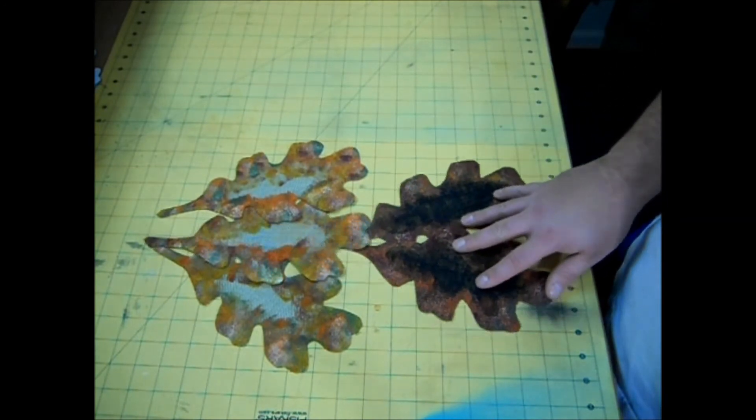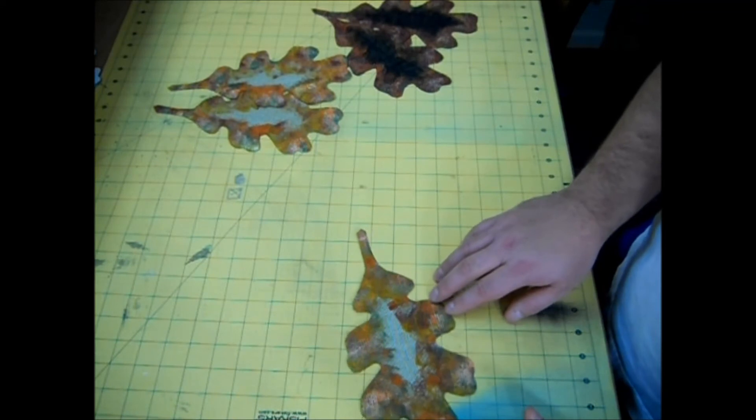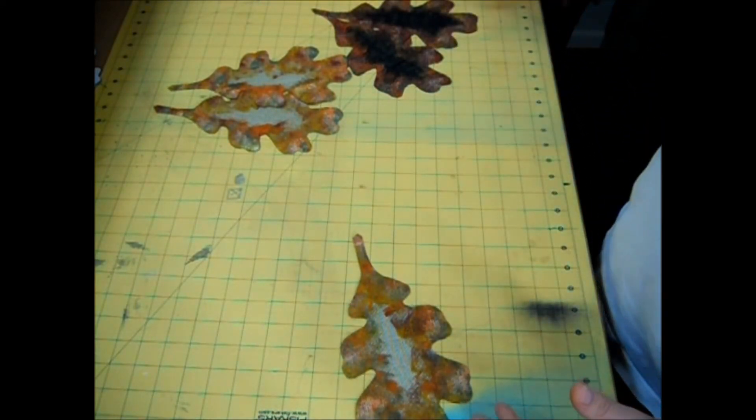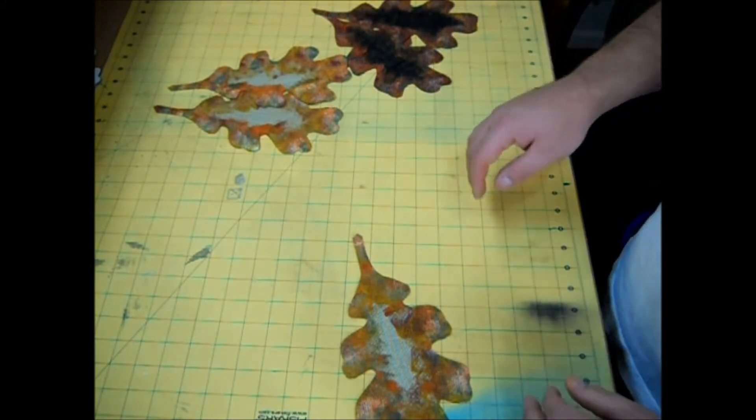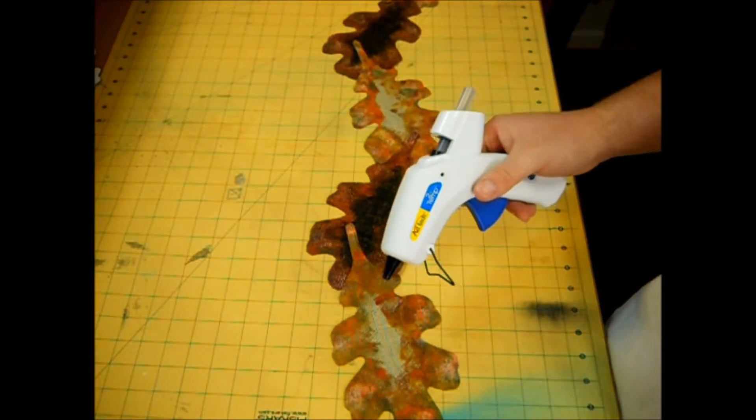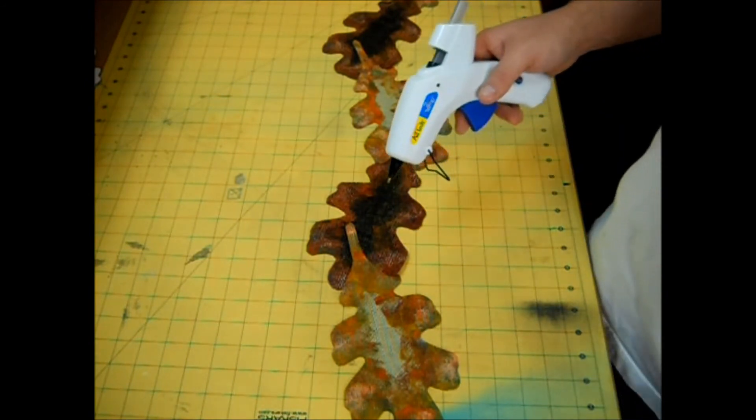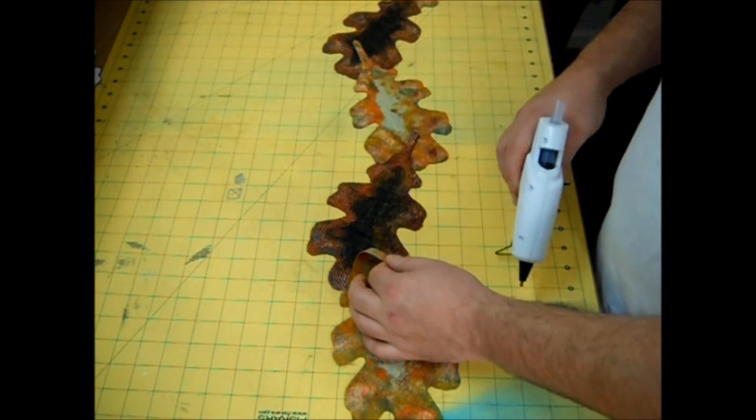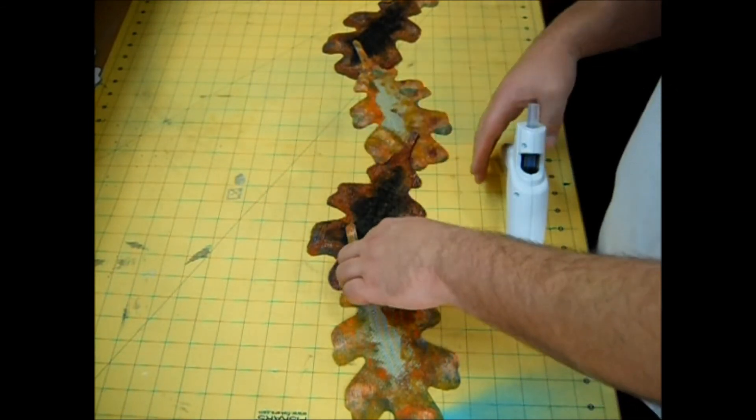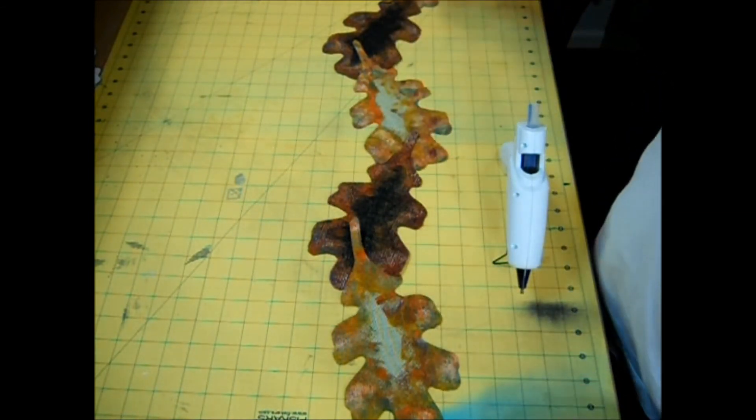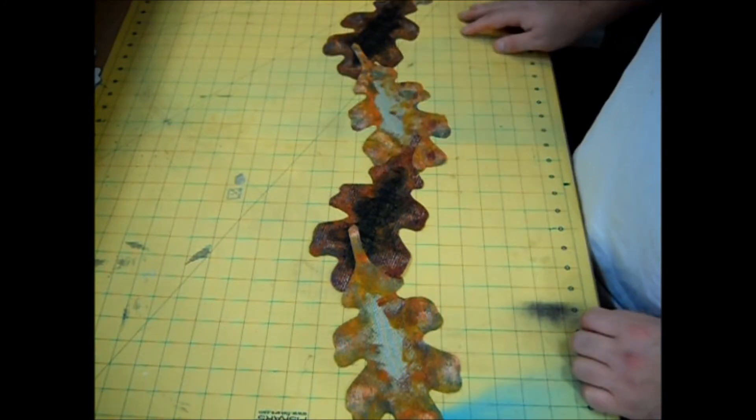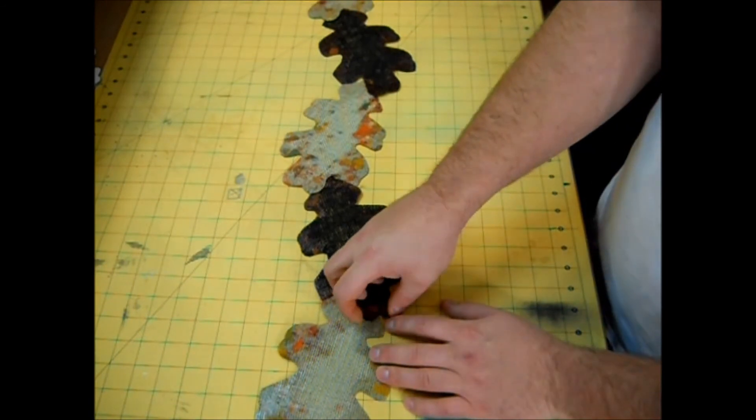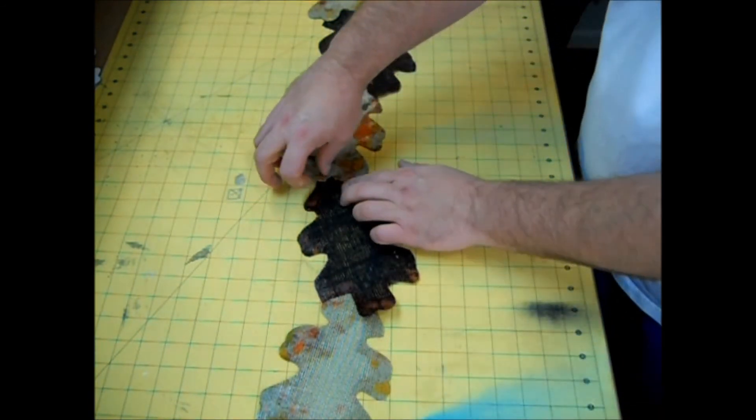Our next step we're going to want to do is lay these out how we want to glue them. And I know I want this 36 inches long and about 6 inches wide. Our next step is to take some hot glue, and I like to just start at the stem, put a bead of glue and press it down, and do that along the whole top. When that's dry, you want to flip it around and glue any loose pieces down.